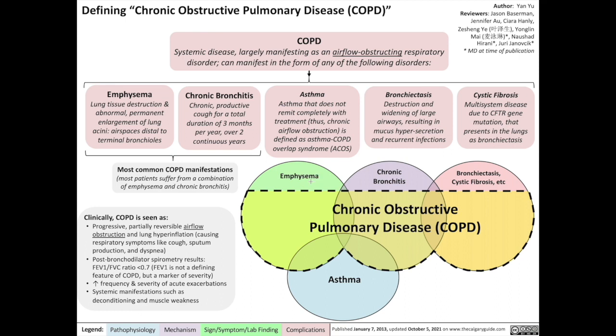Note that out of these separate conditions — emphysema, chronic bronchitis, bronchiectasis, cystic fibrosis, and asthma — there's a portion of these five separate disorders that can be encompassed by the definition of chronic obstructive pulmonary disease.